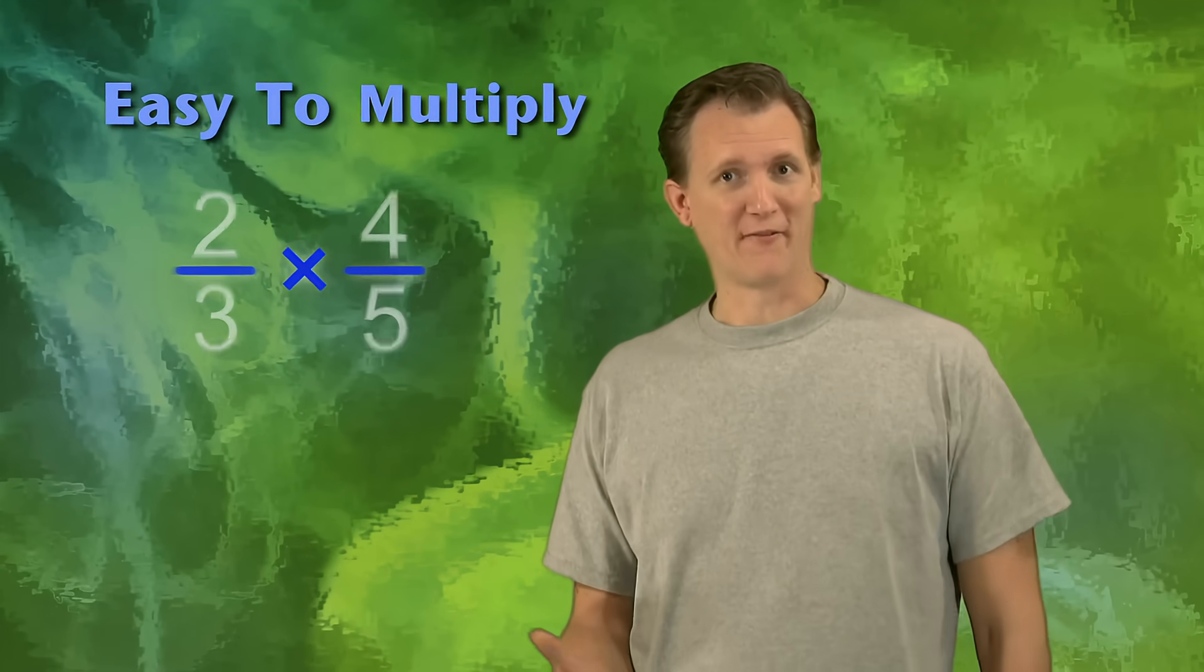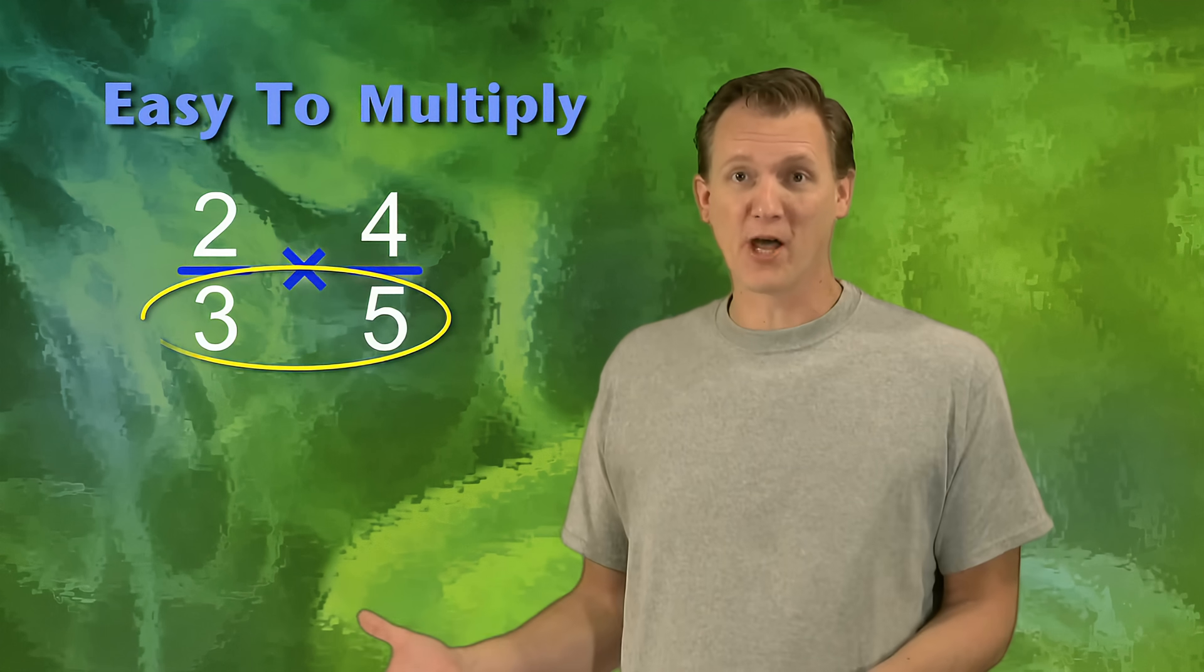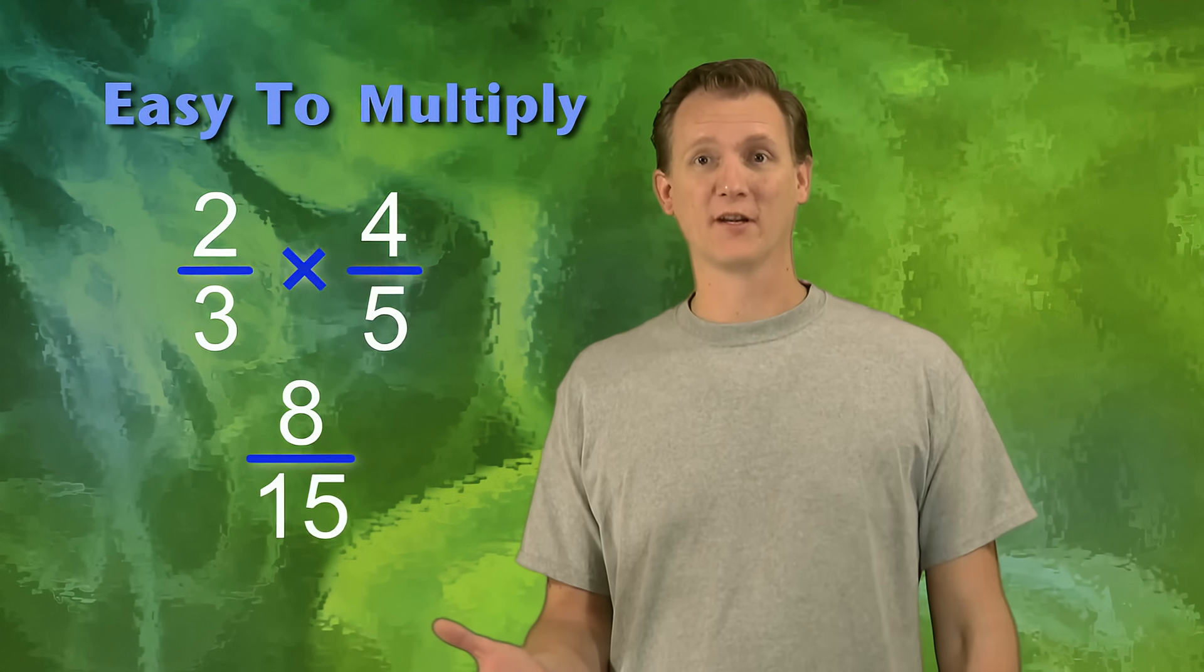You remember how easy it is to multiply fractions, right? You just multiply the top numbers together, and you multiply the bottom numbers together, and you have your answer. So you might be wondering, can't we just do that with addition too? Can't we just add the top numbers together, and add the bottom numbers together, and get our answer?